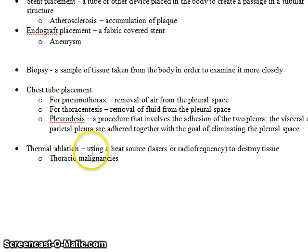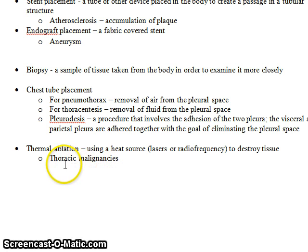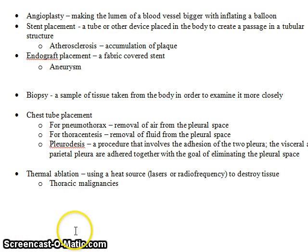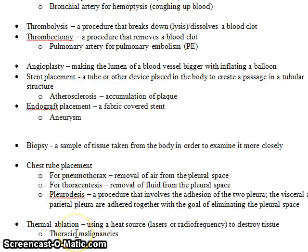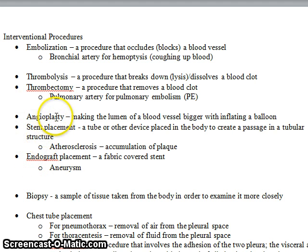Thermal ablation uses a heat source — usually a laser or radio frequency — to destroy tissue. This could be done for any thoracic malignancy or any cancer within the thorax, or anywhere in the body. That covers the interventions associated with the thoracic area in its simplest form. We will tackle each of these topics in much more depth, but these are the primary interventions that pertain to the thoracic area.